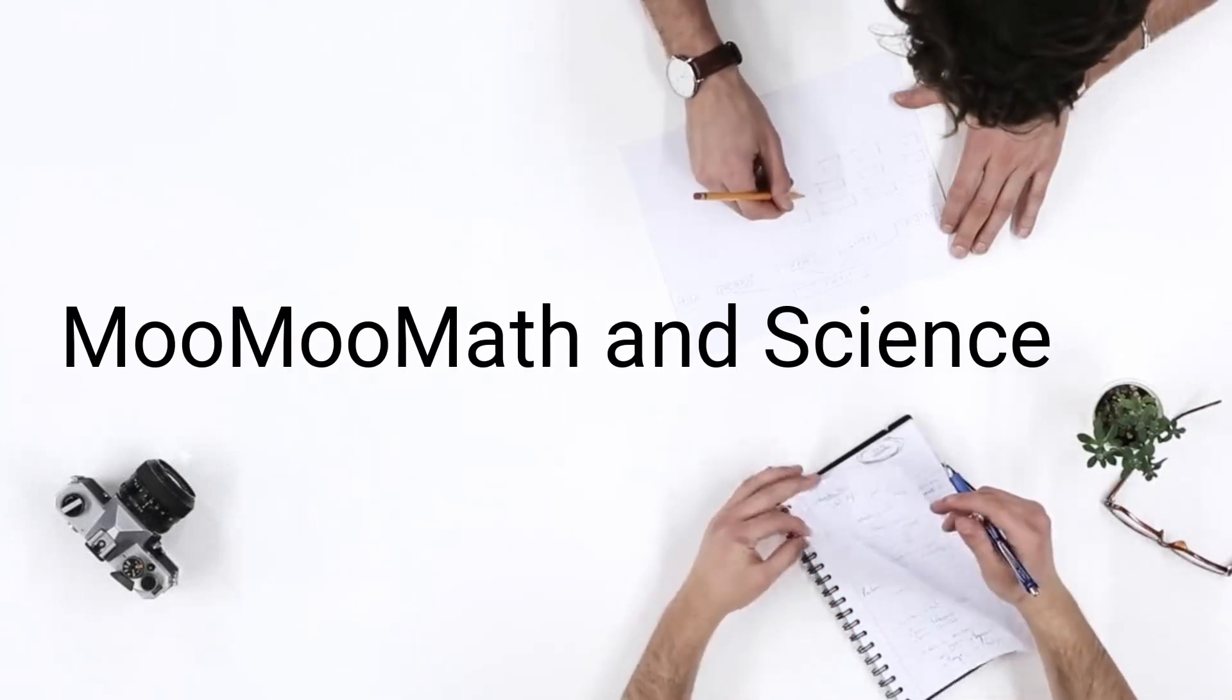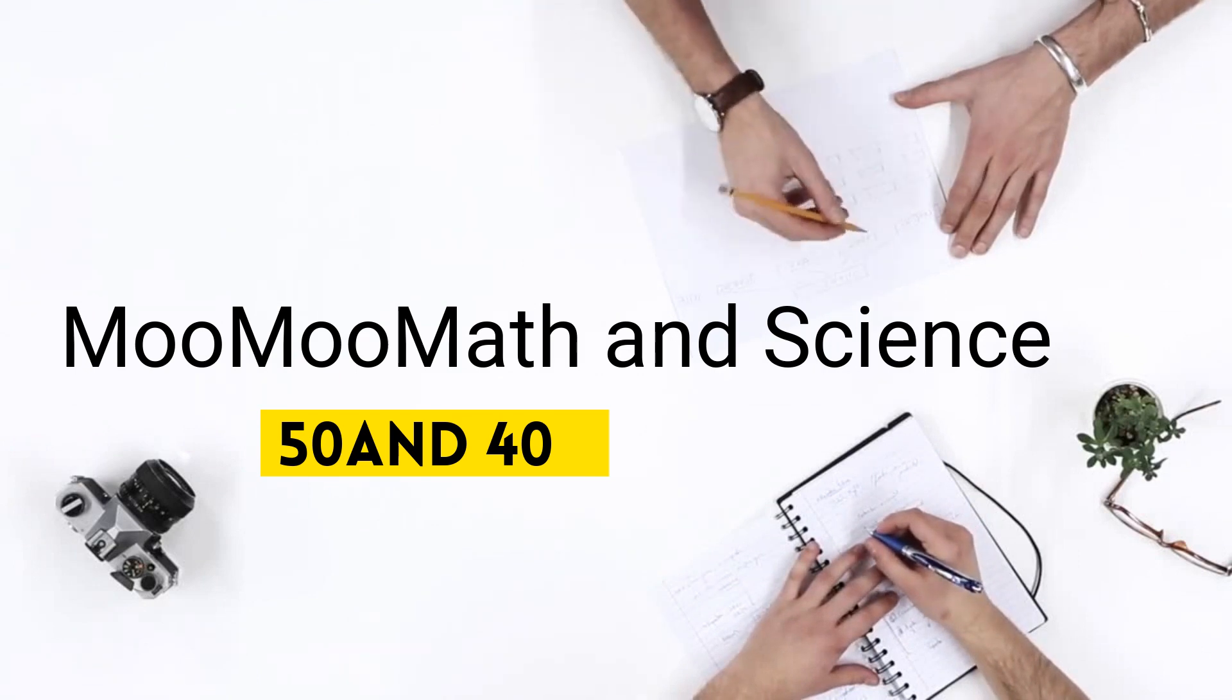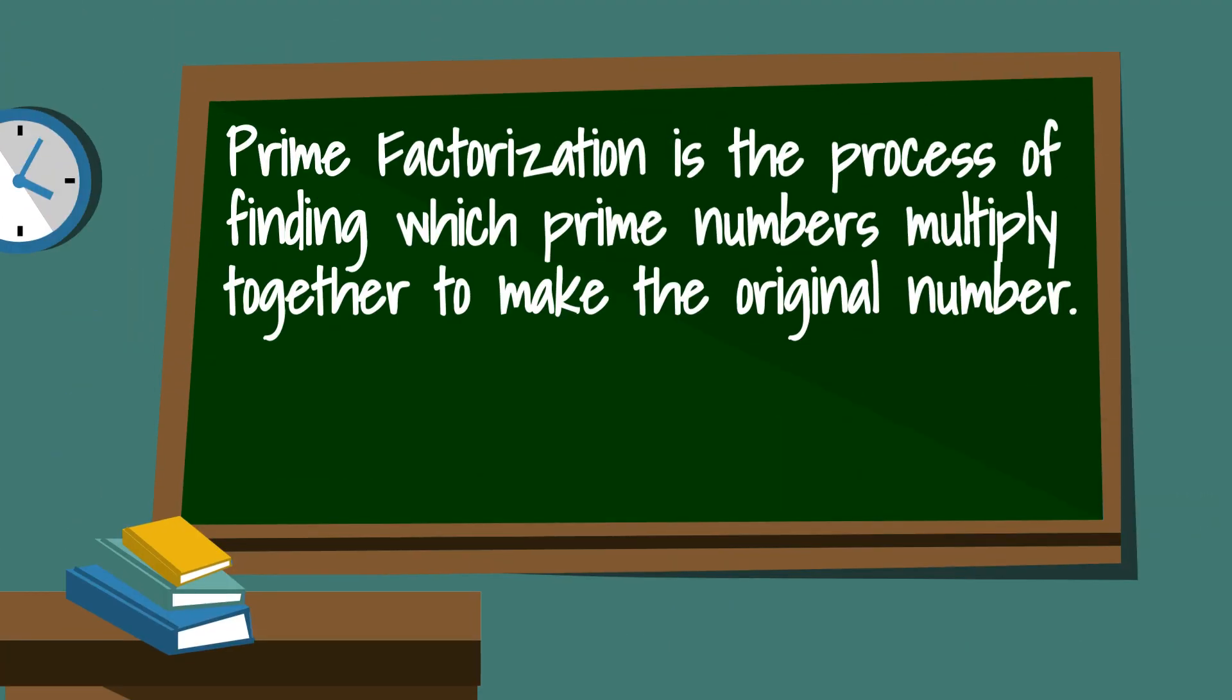Welcome to Moo Moo Math and Science and the prime factorization of 50 and 40. Prime factorization is the process of finding which prime numbers multiply together to make the original number.